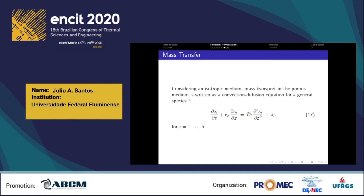For mass transfer, considering an isotropic medium, mass transfer in the porous medium is written as a convection-diffusion equation for a general species i. For i equals 1 corresponds to starch, i equals 2 to dextrins, i equals 3 to glucose, i equals 4 to maltose, i equals 5 to maltotriose, and i equals 6 to limit dextrins. The first term is the accumulation term, the second term is related to advection, the third term is related to diffusion, and finally xi is related to generation or consumption, as discussed before. The term Vz is seepage velocity.